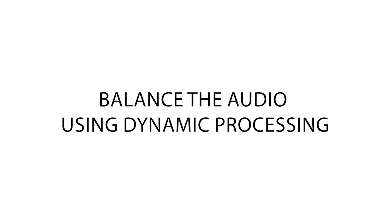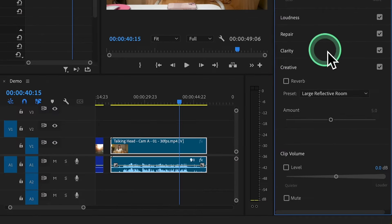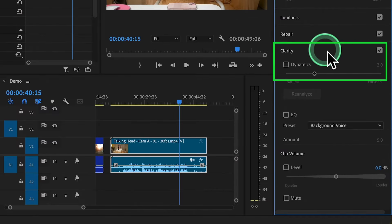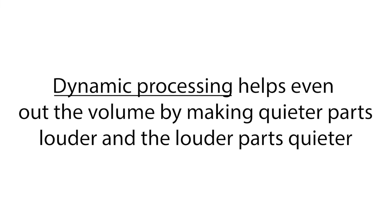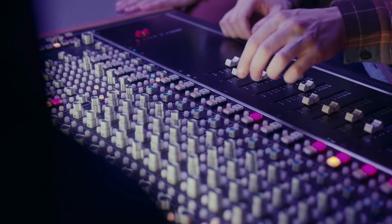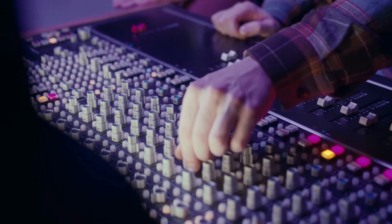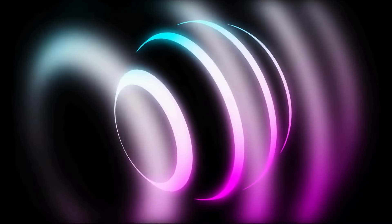Now let's balance the audio using dynamic processing. In the Essential Sound panel, under the Clarity section, enable Dynamics by clicking the checkbox. Dynamic processing helps even out the volume by making quieter parts louder and louder parts quieter, ensuring more consistent audio levels throughout your clip. This step is essential for maintaining a balanced and professional sound.